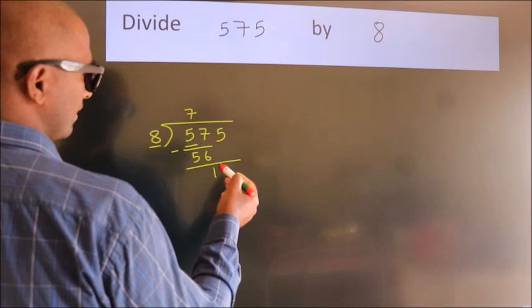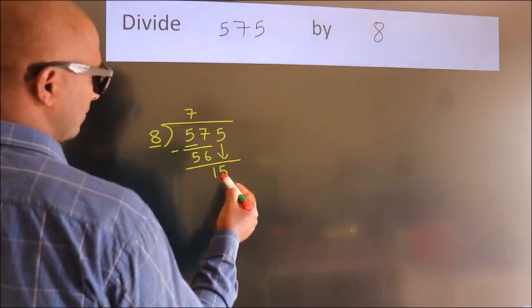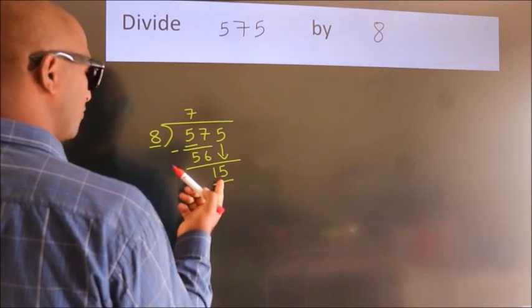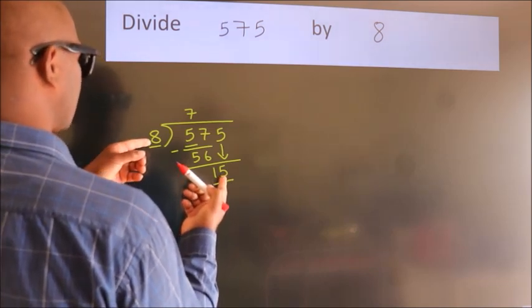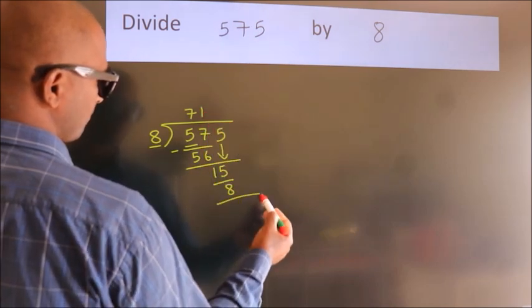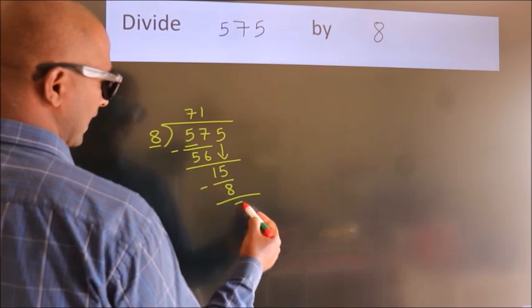After this, bring down the next number. So, 5 down, making 15. A number close to 15 in the 8 table is 8 times 1, which is 8. Now, we subtract and get 7.